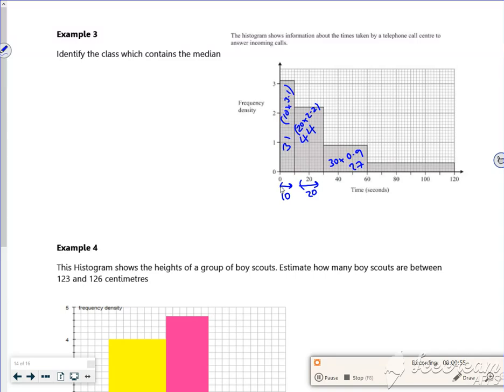And this one is, what is it? 10, 20, 30, 40, 50, 60 by 0.3 I wonder, to give 18.